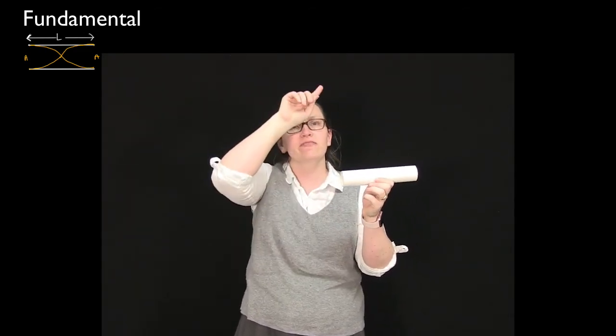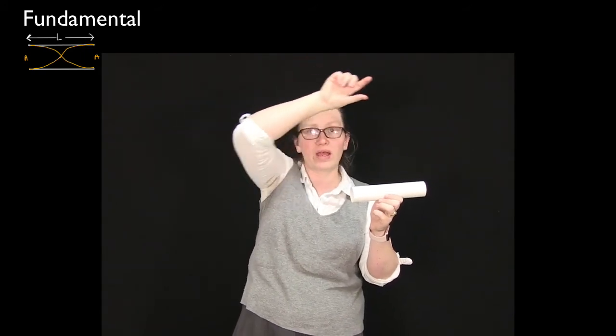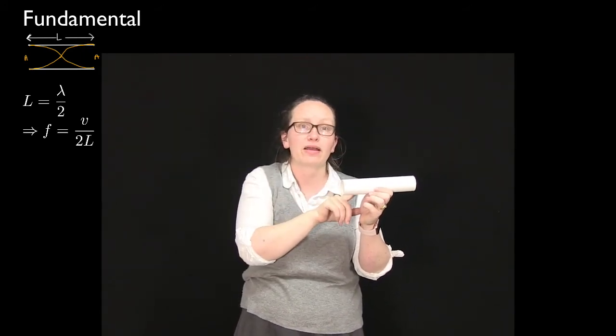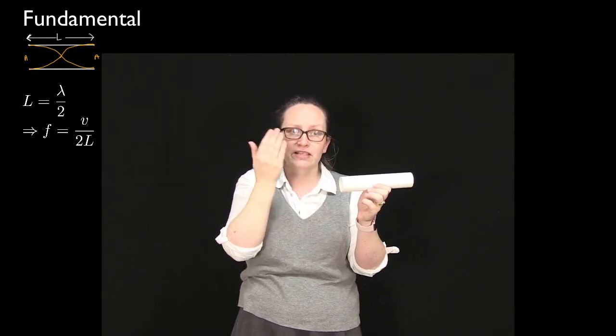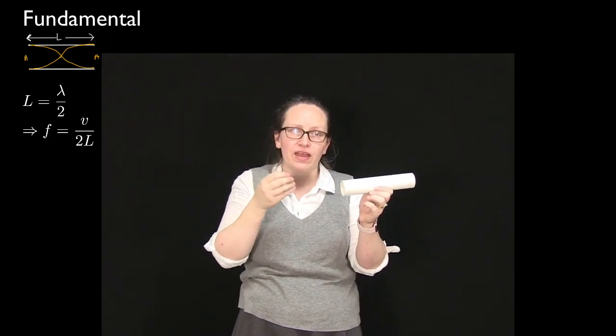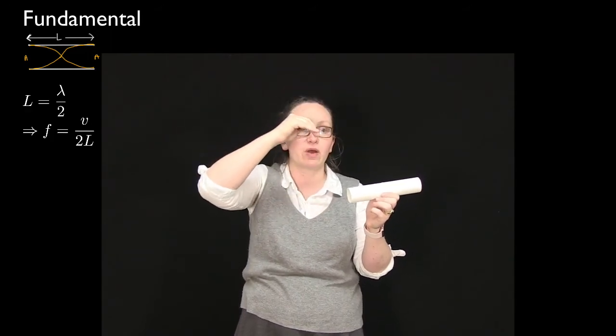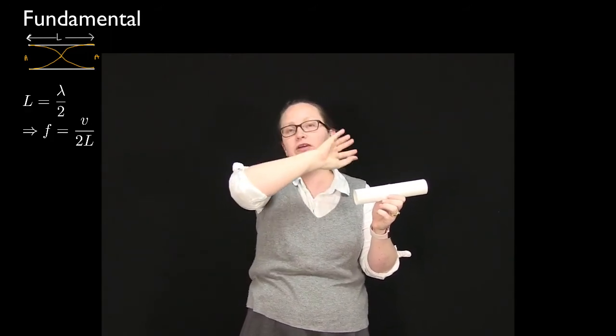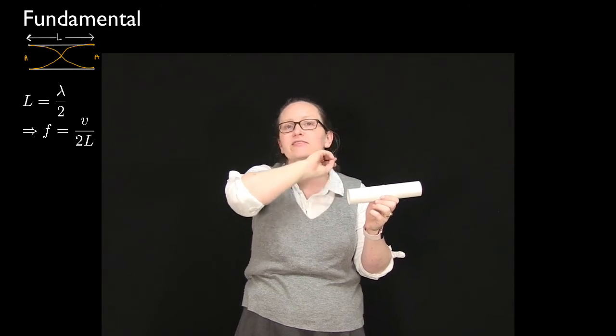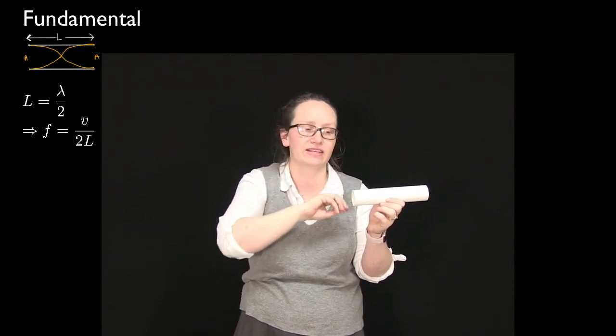So looking at the figure you can see a quarter wavelength and then another quarter wavelength. So we've got half a wavelength inside that pipe there. So L is equal to lambda over two. And then just using the frequency is equal to the velocity over the wavelength, we can see that the frequency is equal to the velocity divided by 2L in this case.